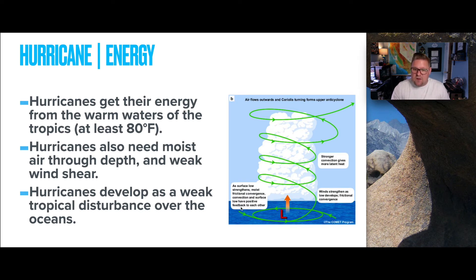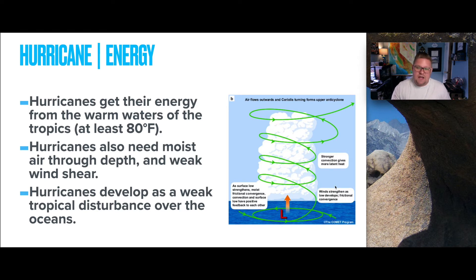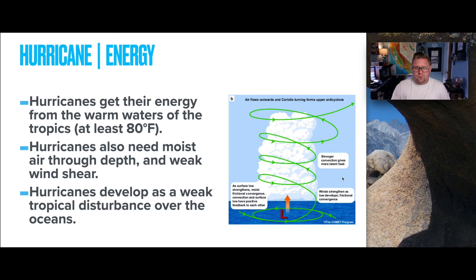As additional moisture and heat begins to rise, cooling through adiabatic processes creates cloud systems and a developing storm. As the surface low strengthens, moist frictional convergence and convection have positive feedback on one another. A stronger convergence gives more latent heat, which can fuel thunder, lightning, and prolonged evaporation. The Coriolis effect continues to help turn the upper anticyclones.